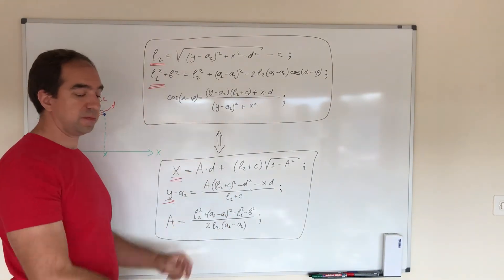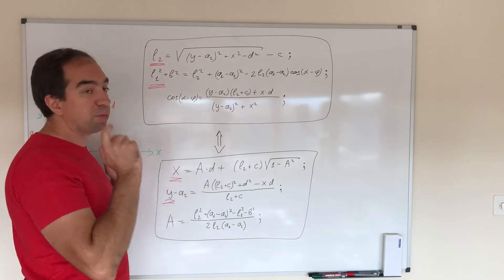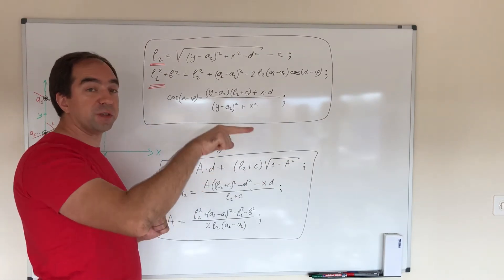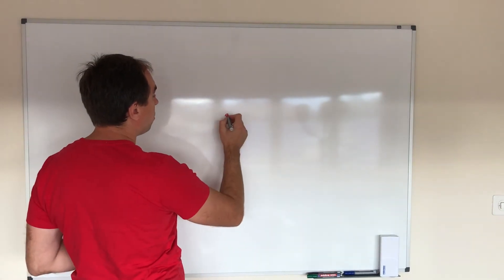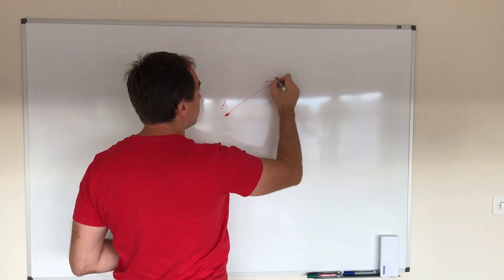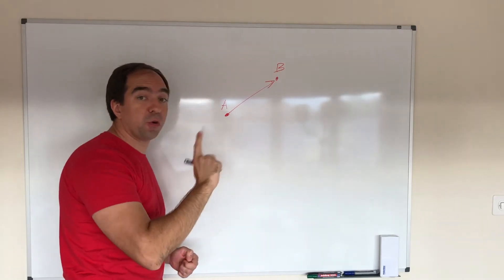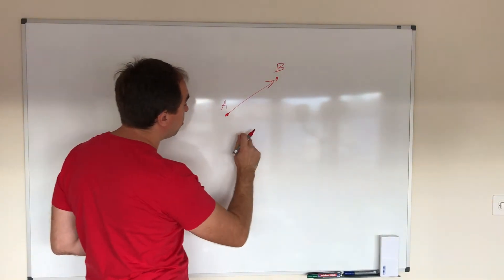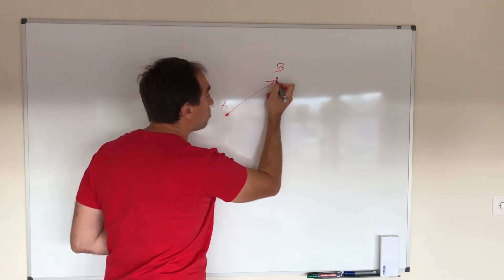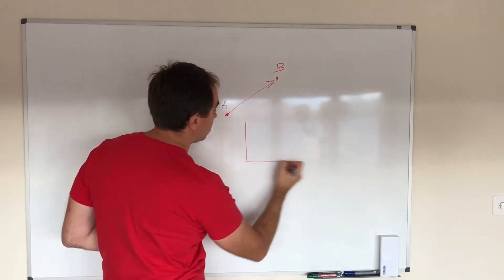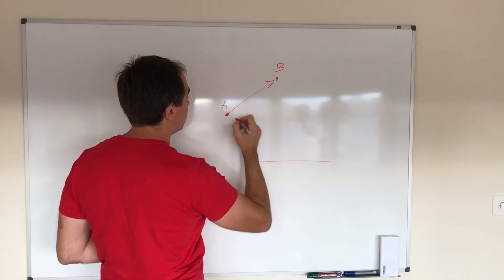When we need to move the end effector from one point to another point, we don't move it with a constant speed. We move it first of all with acceleration, afterwards with a constant speed, and afterwards with deceleration. So the distance along this trajectory looks something like this.